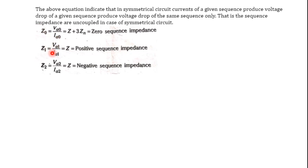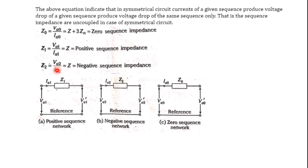Similarly, for positive sequence voltages, it consists of positive sequence current and impedances. There is no correlation from positive to negative or negative to zero sequence. So on a single-phase basis, we can write: Va1 = Ia1·Z1, Va2 = Ia2·Z2, and Va0 = Ia0·Z0.